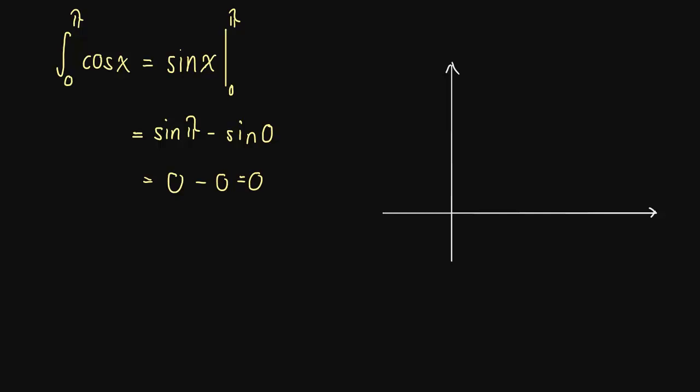And why is that happening? Well, let's take a look. The graph of the cosine function looks something like this on the interval from 0 to π. And so what we're finding out is that it has just as much area above the axis as it does below.